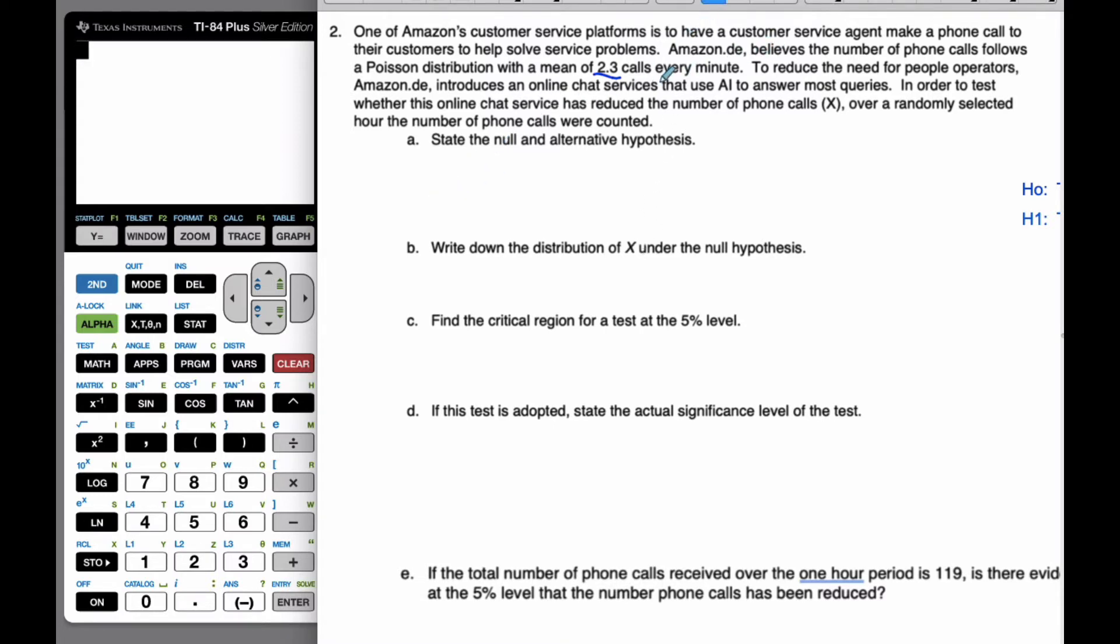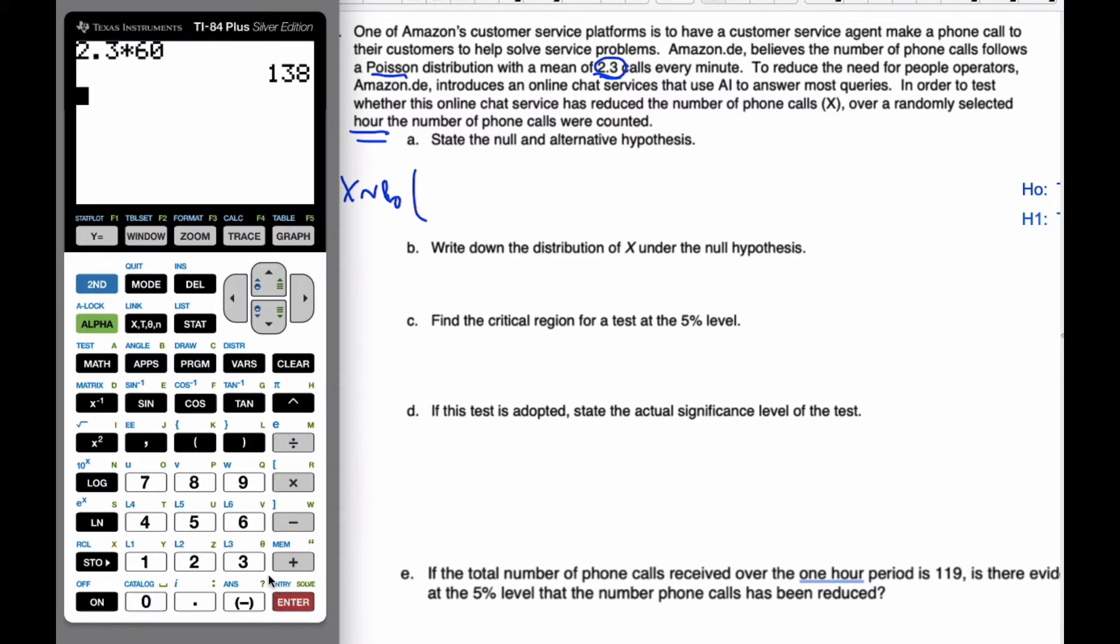I know that this is going to be a Poisson scenario because it tells us. I know X is going to belong to Poisson, and it's 2.3 calls every minute, and I'm going to be looking at over an hour. I'm going to take the 2.3 and times it by 60. So in an hour, I would expect to have 138 phone calls happening.